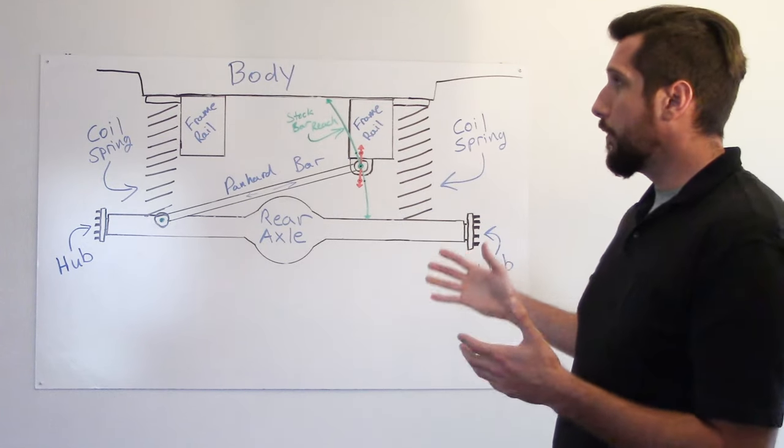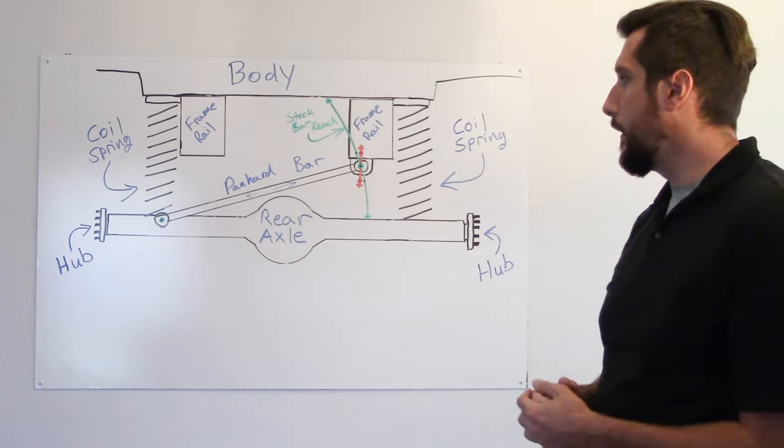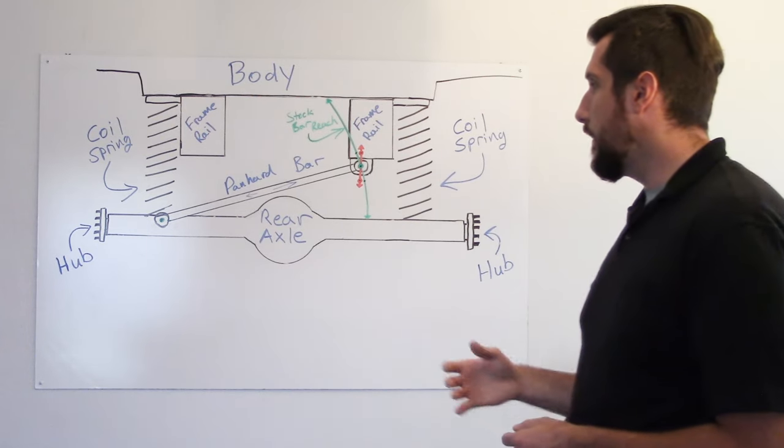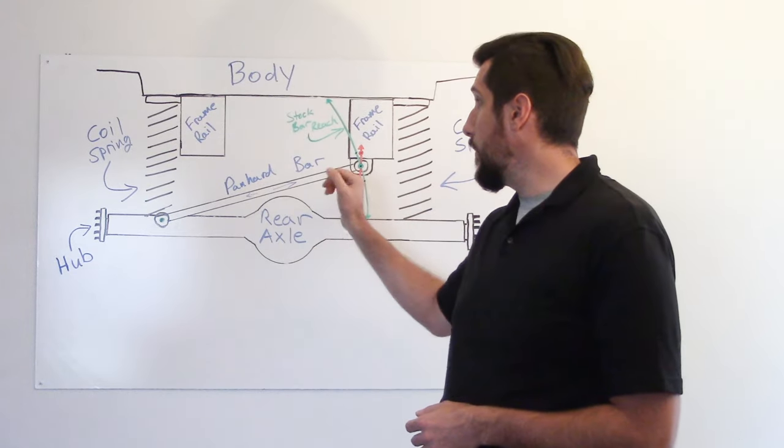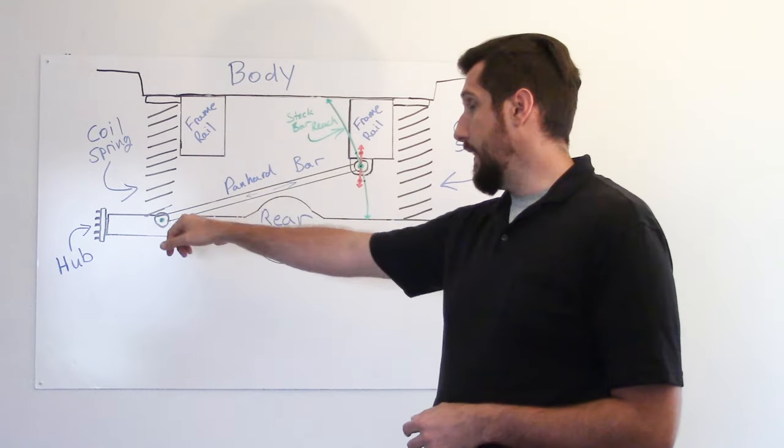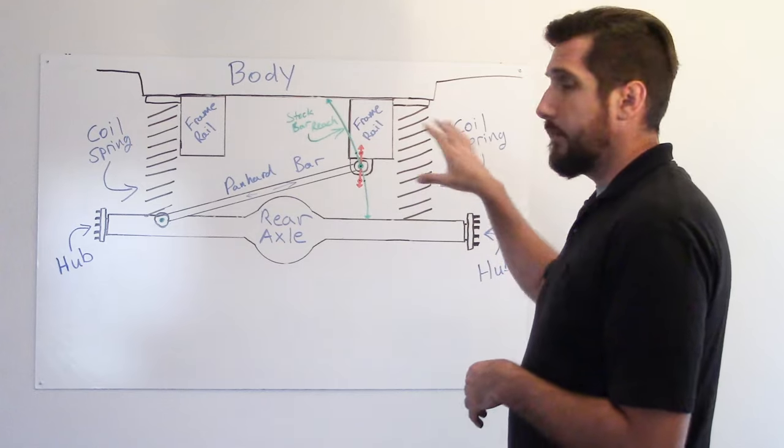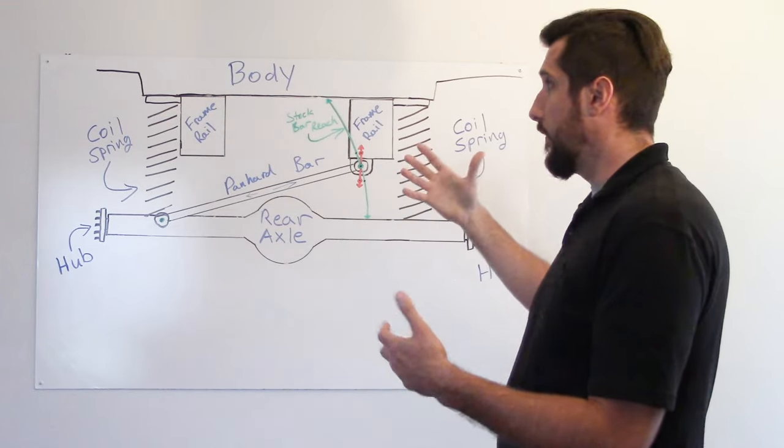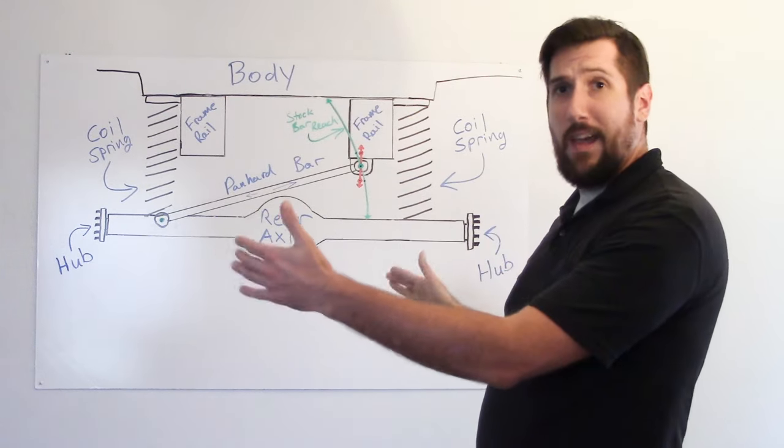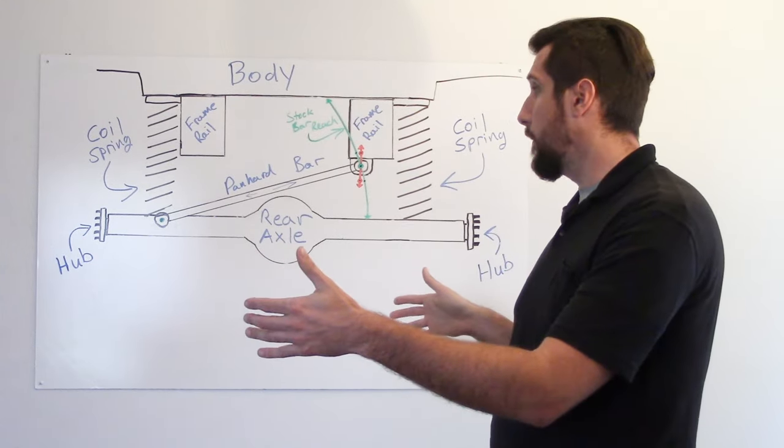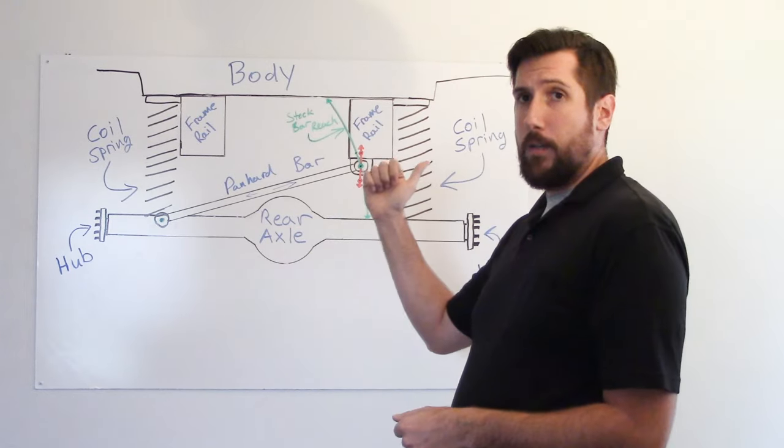So, because we're using coil springs and control arms, it's called more of a multi-link kind of setup. There's not enough lateral support to keep the body centered over the rear axle because if we didn't have the panhard bar here going between the frame and the axle, you go to a hard corner or even just the crown of the road, the body's going to want to follow the force of the turn. It's going to want to go towards the outside of the turn where the axle is tied to the ground by the tires.